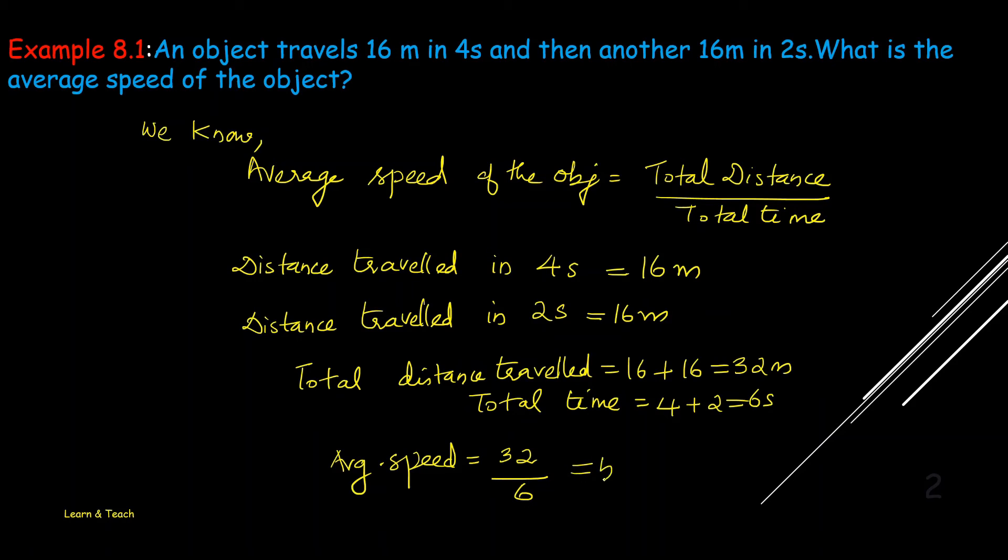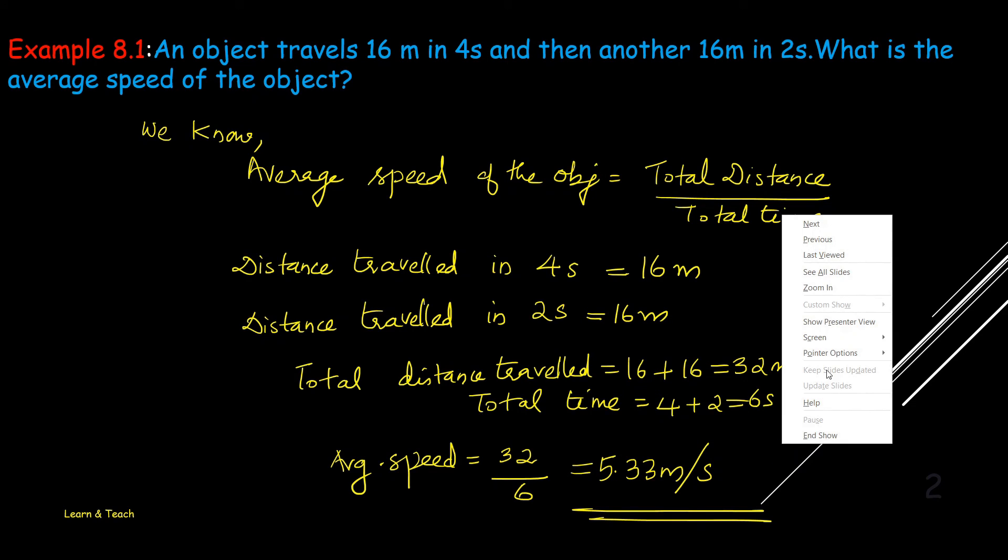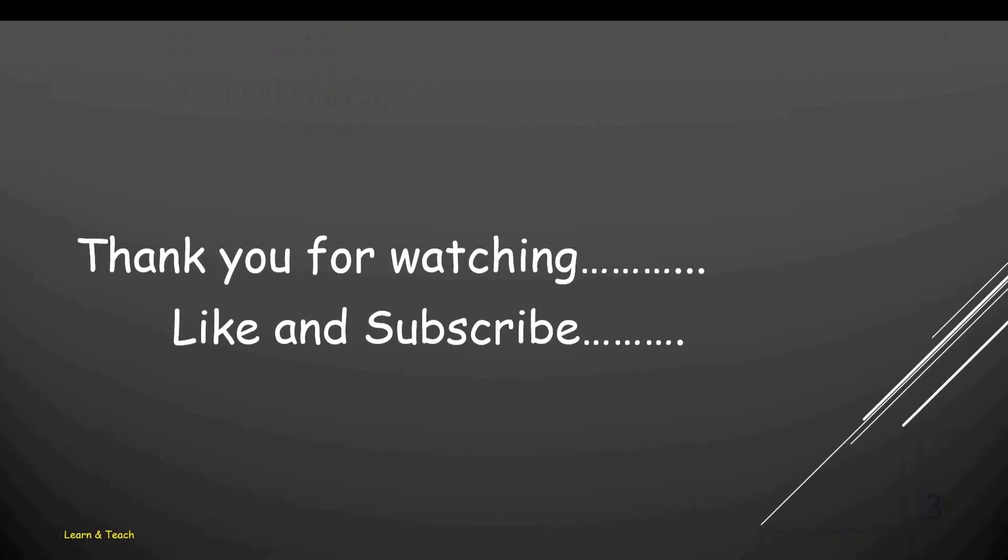32 by 6 means 5.33 meter per second. So, this is the average speed of the object. Thank you.